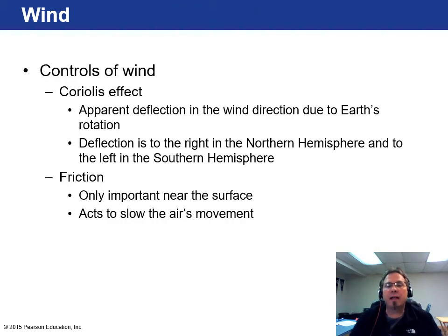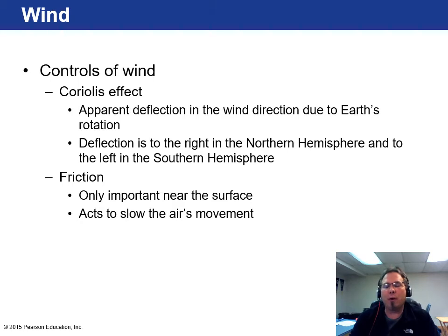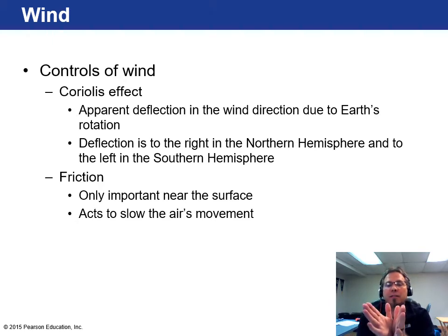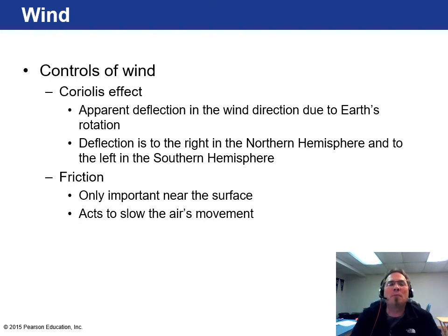Several things control how wind works on Earth. One is the Coriolis effect. Because the Earth is spinning, in the northern hemisphere everything gets deflected to the right, and in the southern hemisphere it's deflected to the left. This plays a role in wind direction, which in turn influences ocean currents since prevailing winds are directed by this Coriolis effect.